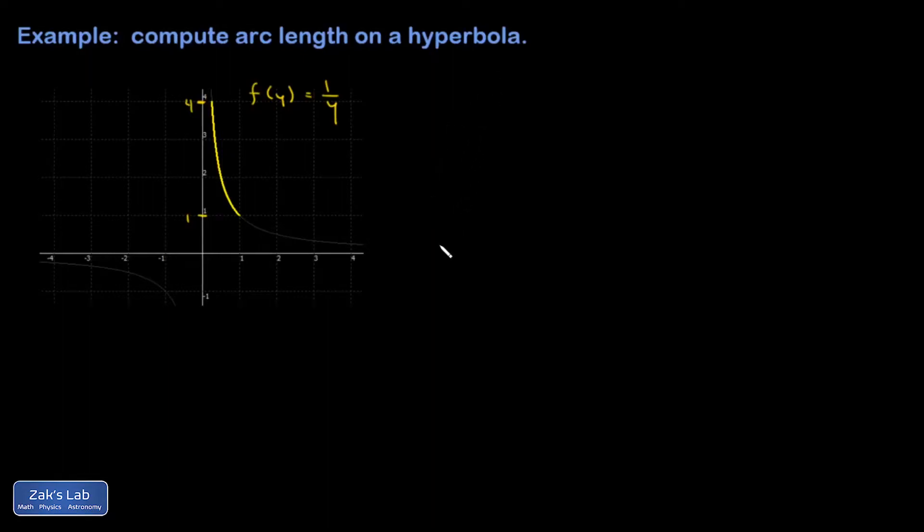Okay, we're going to compute the arc length on a hyperbola, and I defined it in kind of a strange way. I said that this is the curve f of y equals 1 over y. So in other words, we're looking at the curve x equals 1 over y.